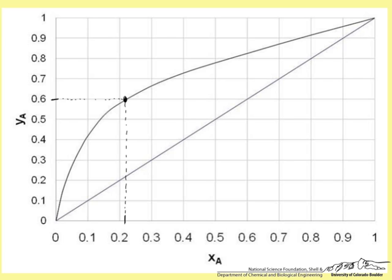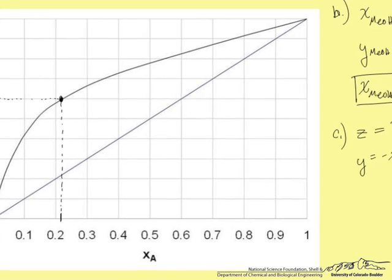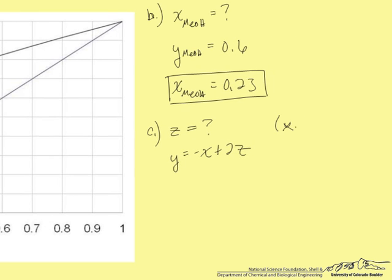First, one point that the operating line must go through is the point of equilibrium that the flash distillation column is operating at. So we already know X MeOH at equilibrium and Y MeOH at equilibrium. This point is 0.23, 0.6. And that's already plotted on our plot.